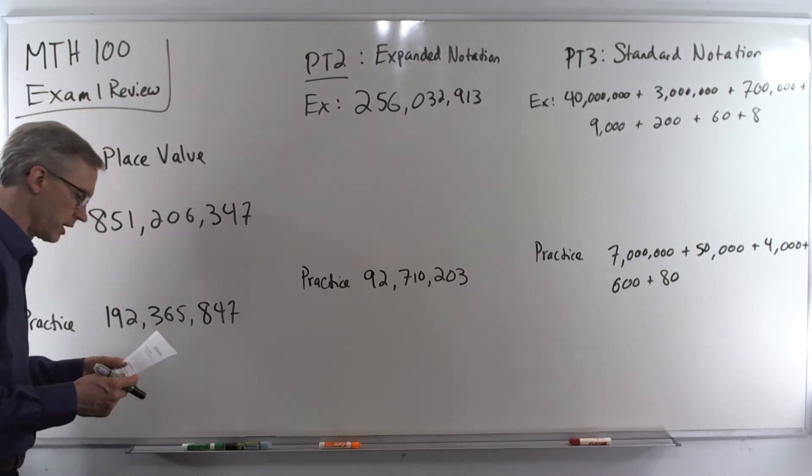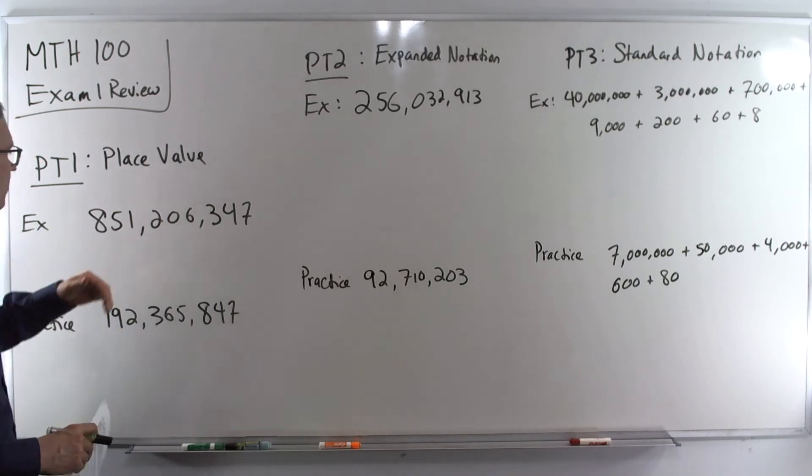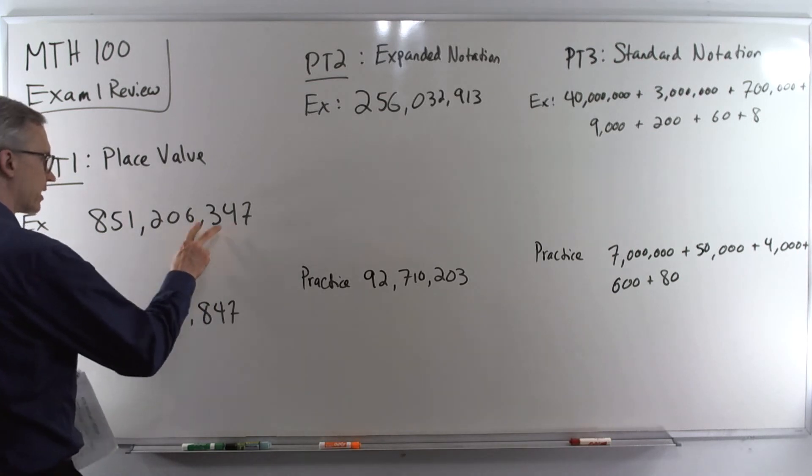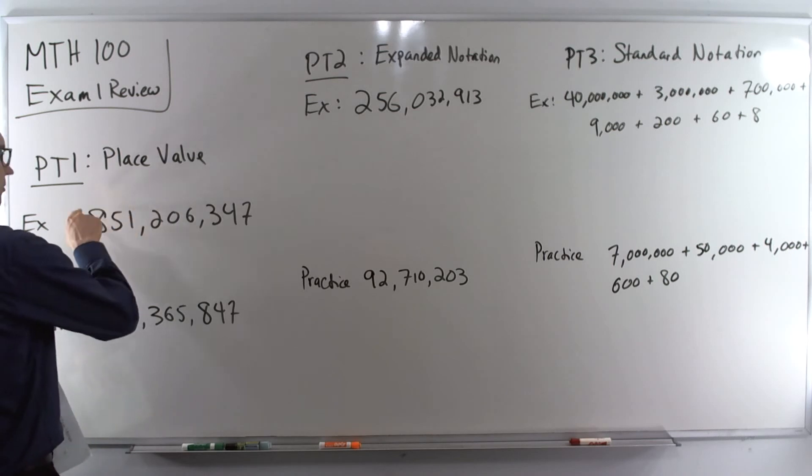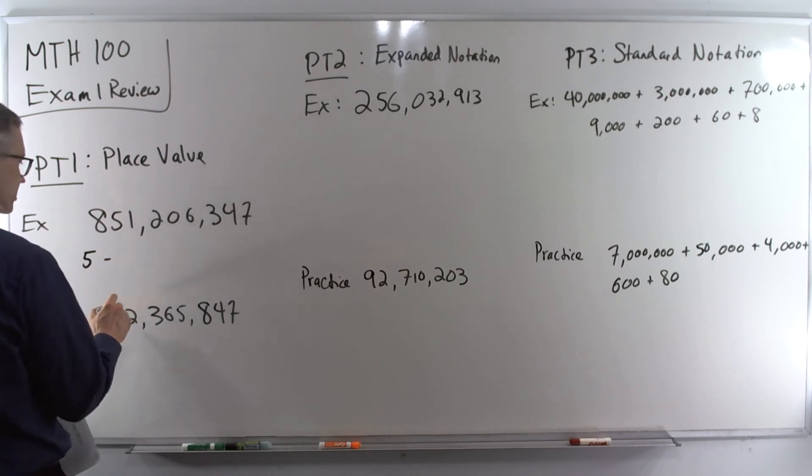The first one is find the digit associated with the place value and then find the value of that digit. So we've got a number here, 851,306,347, and in problem one we're going to find out how many ten millions are there in this number. So we need to find the ten millions place. Ones, thousands, millions. So here's the millions group. Ten is the second one over. So 5 is the digit in the ten millions place.